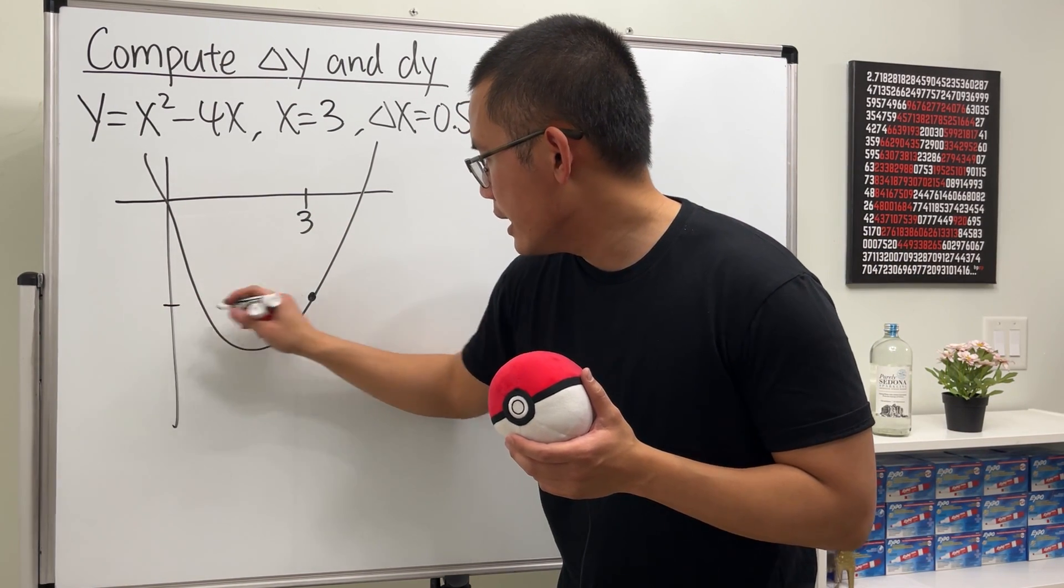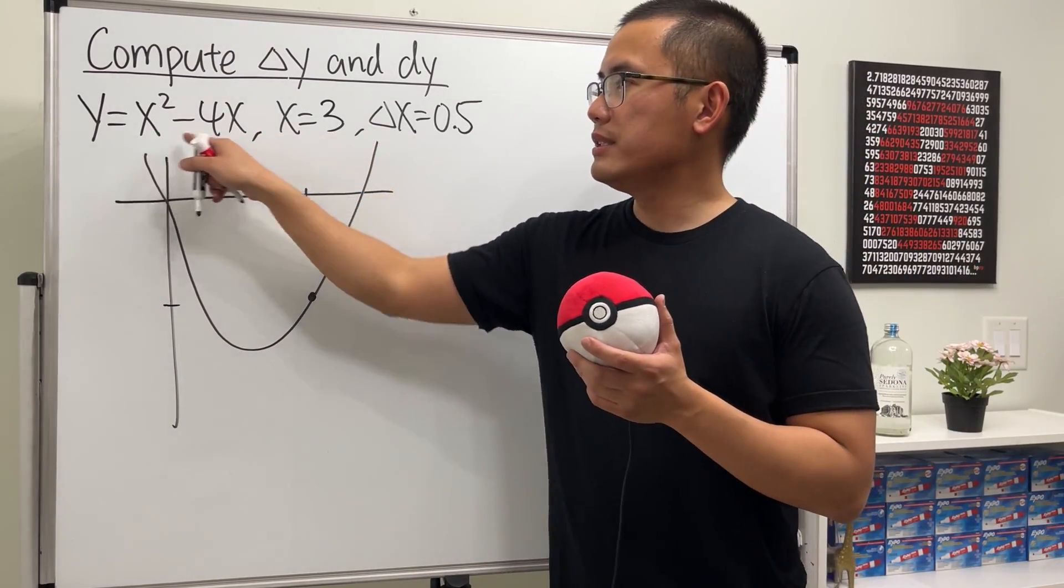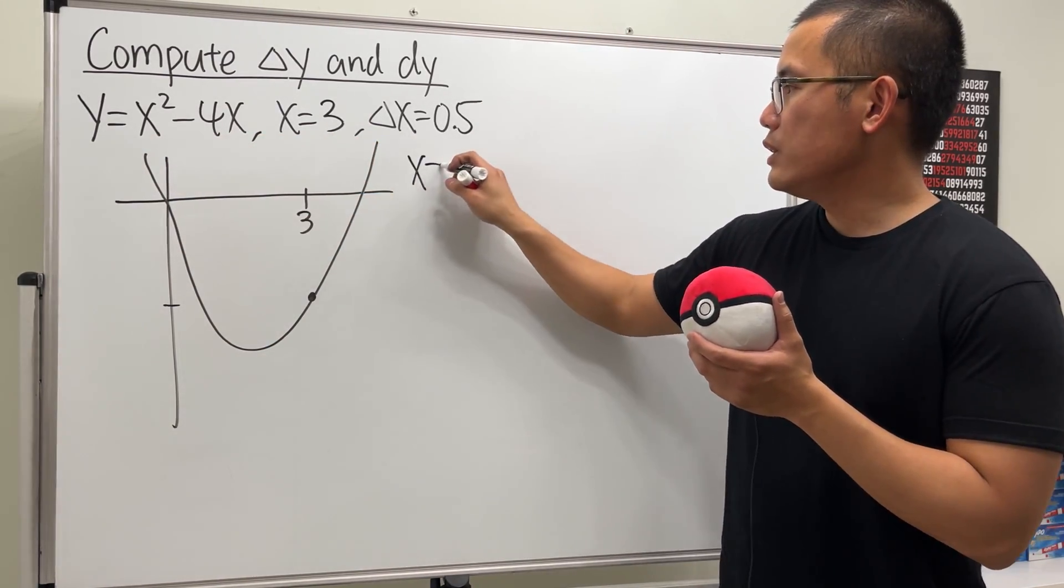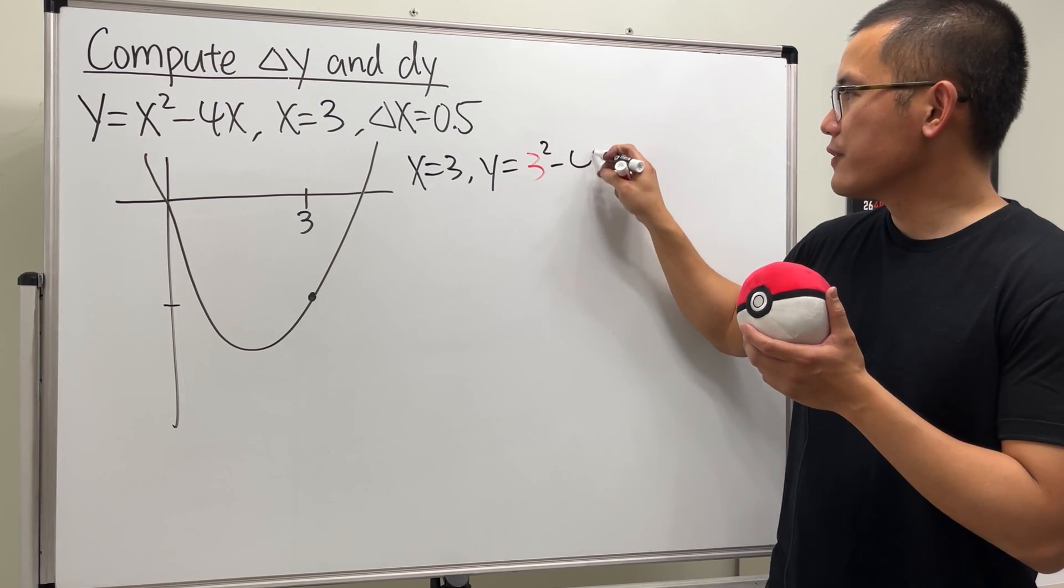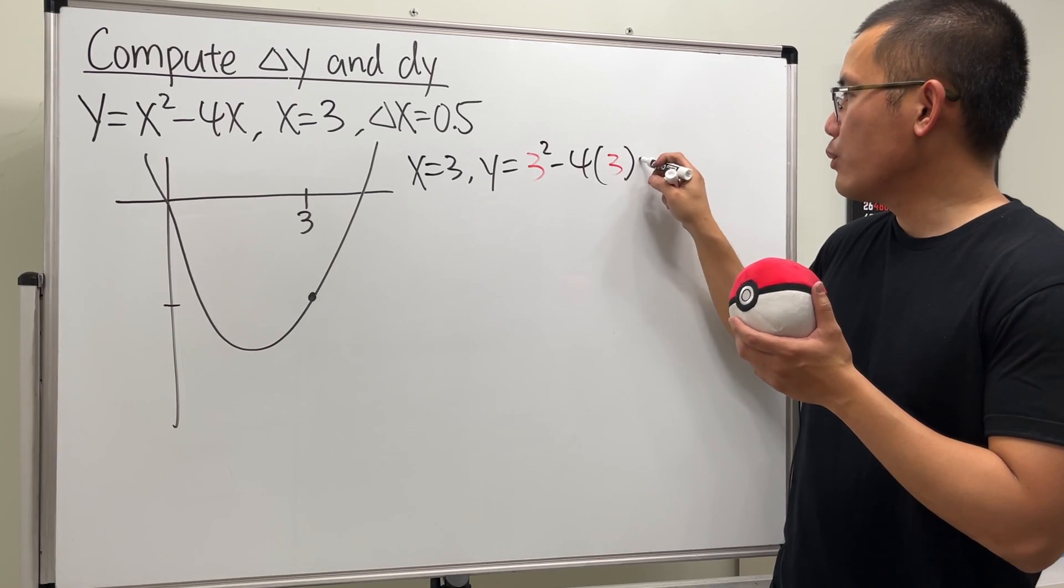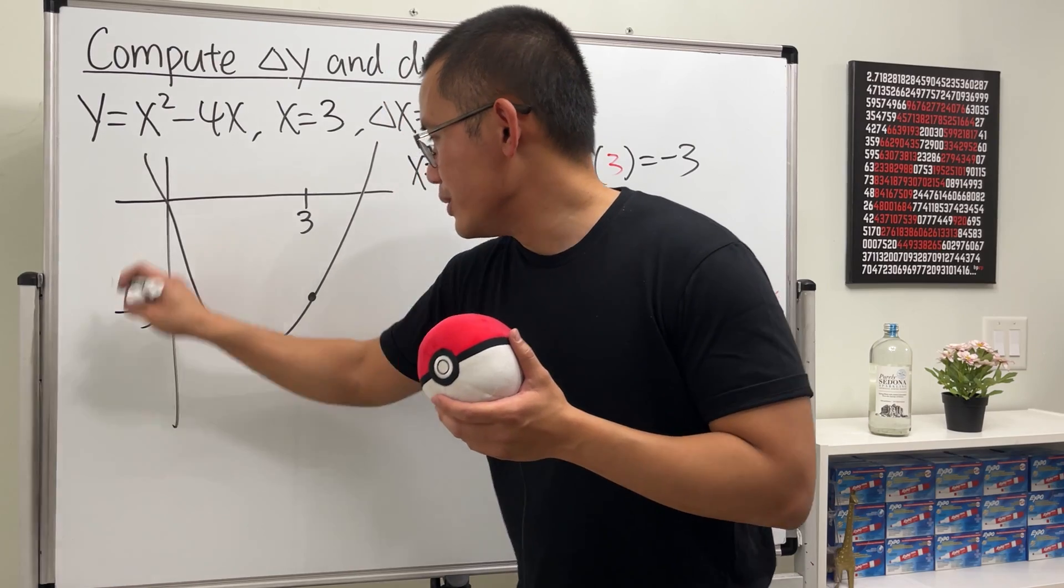We care about when x is 3, so let's say 3 is right here. Let's come back down and we will have to find the y value, and that is right here. Plugging 3 into this x, we see when x is 3, y will be 3 squared minus 4 times 3.